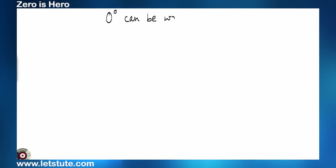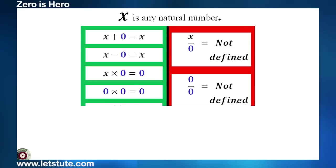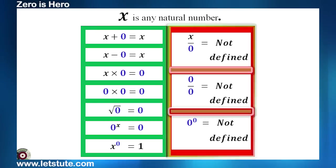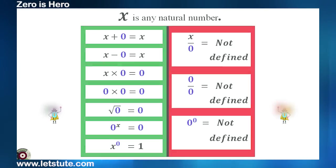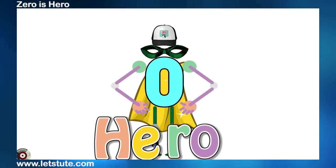We can again write 0 raised to 0 as 0 raised to 1 minus 1. And so, this clearly shows that 0 raised to 0 is undefined. So, friends, some of the values might be defined, some might not. But, one thing is definitely true that 0 is a hero when it is at its correct place.